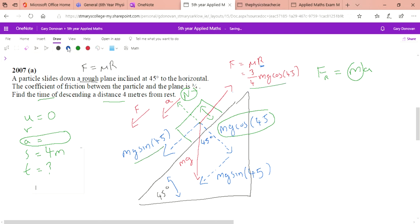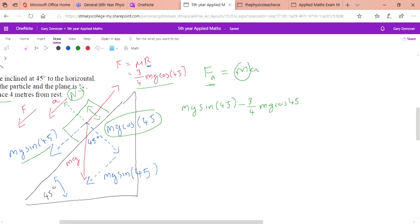It's moving down the slope, we have two forces in that direction. Because it's moving down the slope our downward force is going to be bigger, so the resultant force is mg sine 45 minus 3 over 4 mg cos 45 equals mass times acceleration. They never gave us the mass but we have m in all these terms so we can cancel it. We're left with g sin 45. Sin 45 is exactly the same as cos 45 which is equal to 1 over root 2.